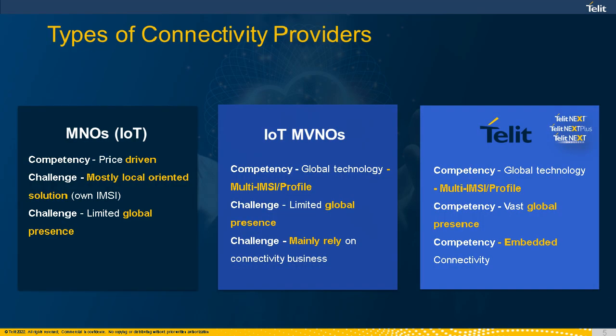So who are the usual suspects available to solve those challenges? We can see three pillars of connectivity providers. Starting from the left: first, the local IoT-oriented MVNOs — very price-driven, with strong hold on the local market, mostly local, using their own IMSIs, with national roaming not permitted in most cases, and human resources located locally with limited global presence.